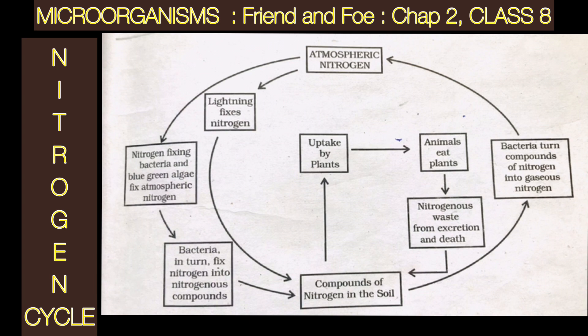Before going to the harmful effects, let's discuss the nitrogen cycle, which is very important in our day-to-day life. Looking at the diagram, we should remember that the atmosphere is composed of 78% nitrogen gas. This nitrogen is very important for all living organisms — it forms an important part of proteins, chlorophyll, nucleic acids, and vitamins. But in its free form in the atmosphere, it cannot be consumed directly.